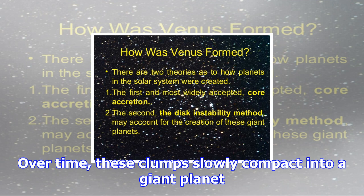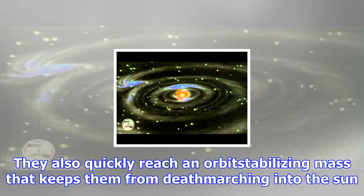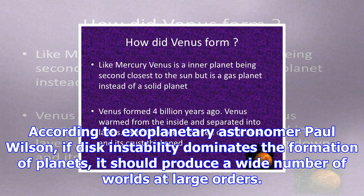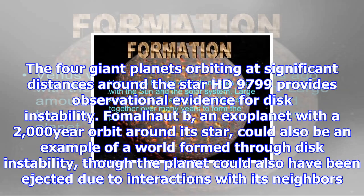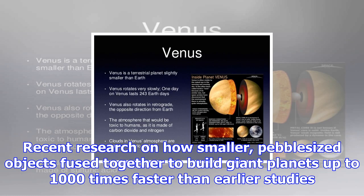According to a relatively new theory, disk instability, clumps of dust and gas are bound together early in the life of the solar system. Over time, these clumps slowly compact into a giant planet. These planets can form faster than their core accretion rivals, sometimes in as little as a thousand years, allowing them to trap the rapidly vanishing lighter gases. They also quickly reach an orbit-stabilizing mass that keeps them from death-marching into the Sun. According to exoplanetary astronomer Paul Wilson, if disk instability dominates the formation of planets, it should produce a wide number of worlds at large orbits. The four giant planets orbiting at significant distances around the star HR 8799 provide observational evidence for disk instability.